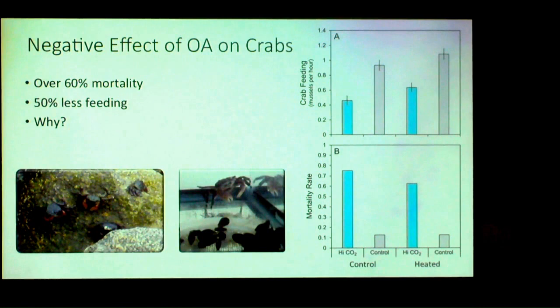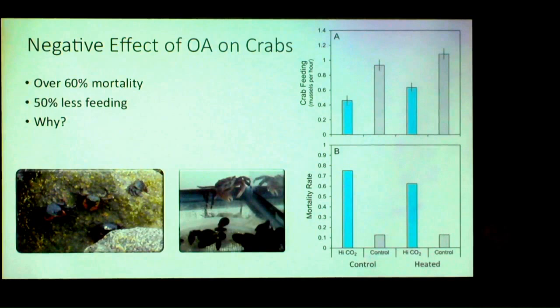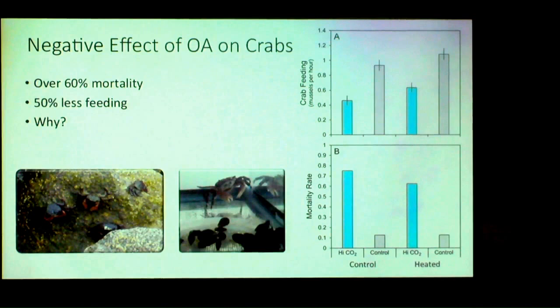Why were the crabs affected? There are a couple of possibilities. Crabs actively maintain their internal pH by pumping in bicarbonate ions. They might be unable to maintain acid-base equilibrium internally under acidified conditions, or they could be spending so much energy actively pumping in bicarbonate ions that it's taking an energetic toll — indirectly leading to the death and reduced feeding we observed. We're now starting to look at whether this is a more general response, not just Pachygrapsus but other crab species as well.